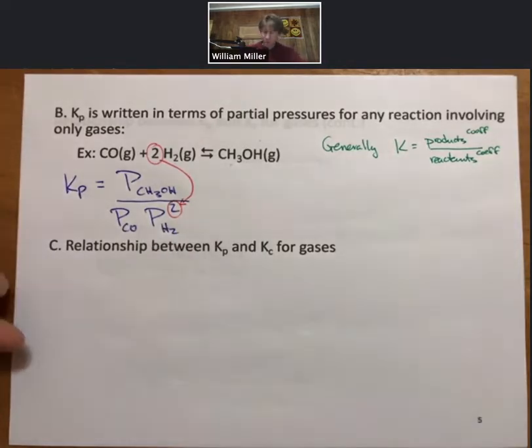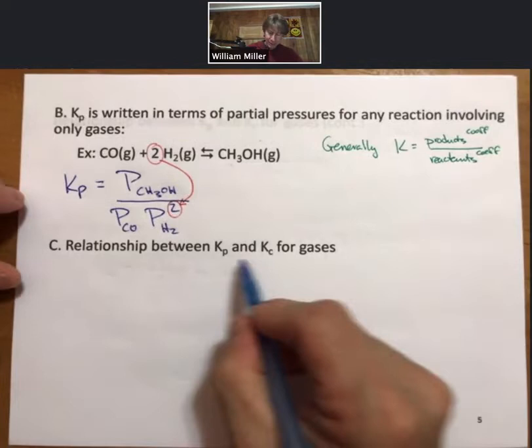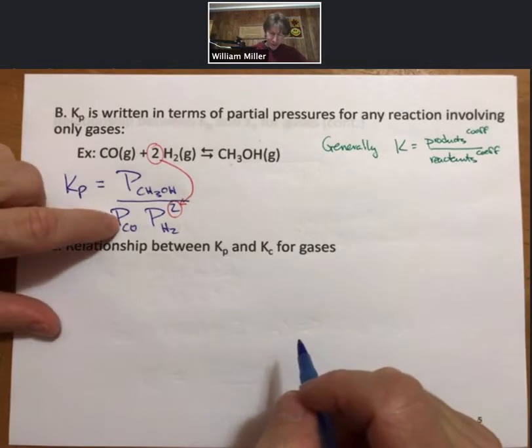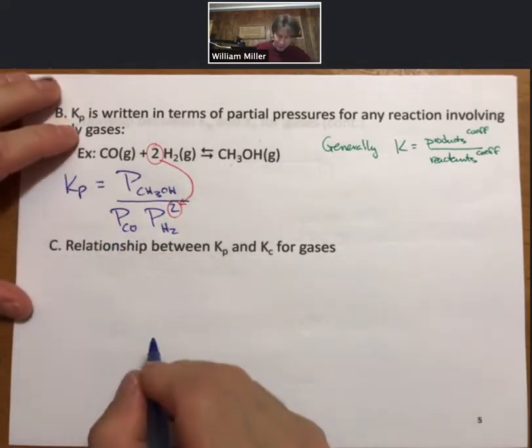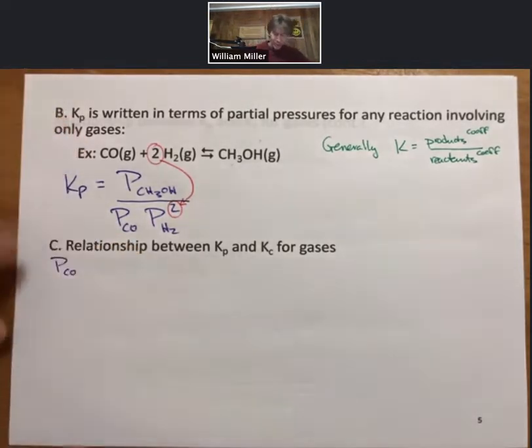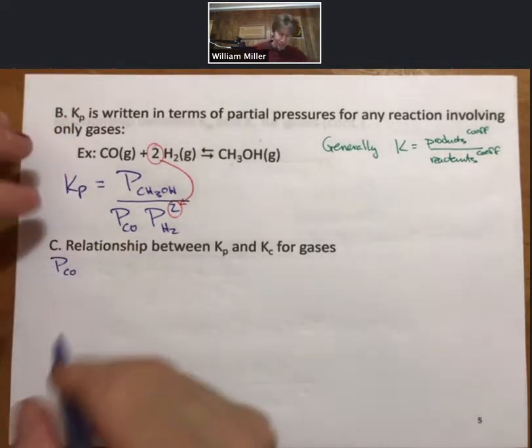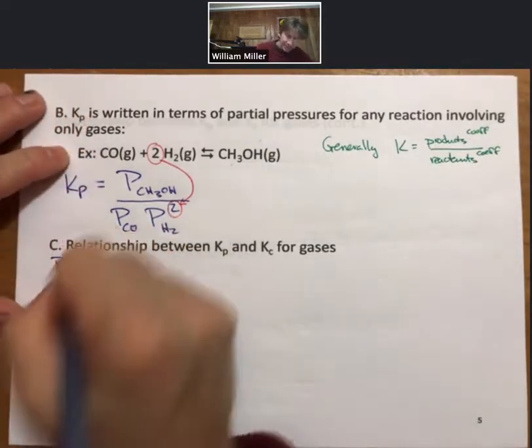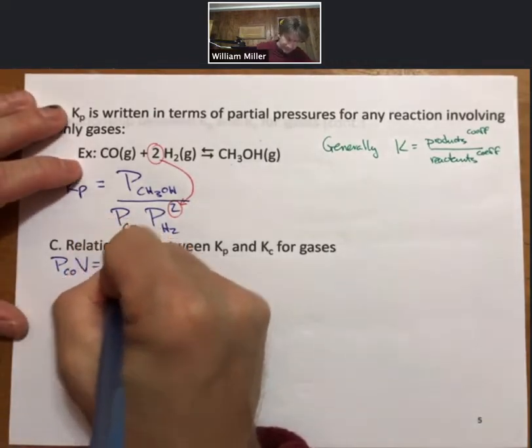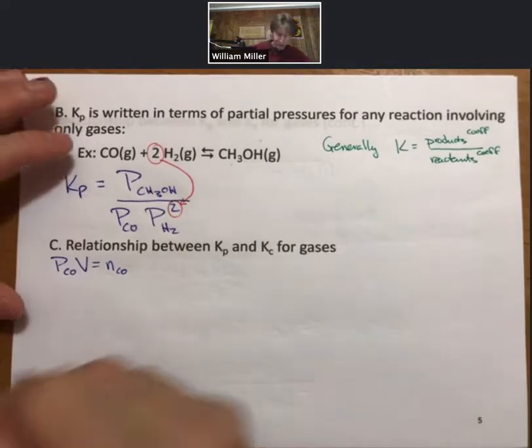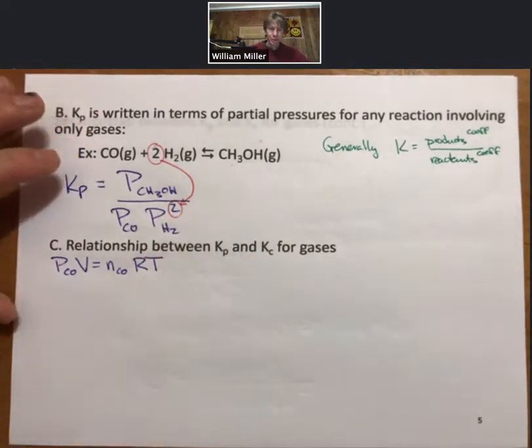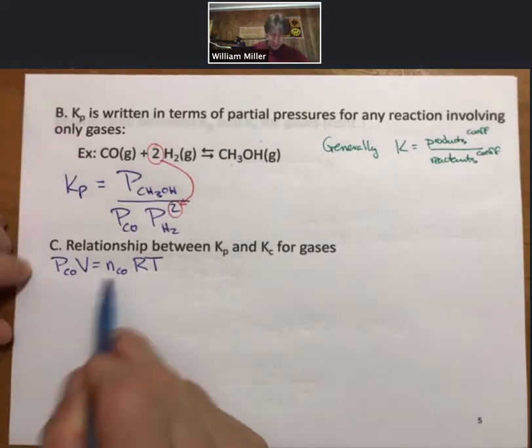Now let's talk about the relationship between Kp and Kc for gases. So we'll start by looking at an individual gas so partial pressure of carbon monoxide and we can write the ideal gas law for that. So partial pressure of carbon monoxide or any of the gases but let's just choose that one, times the volume equals the moles of carbon monoxide times RT.